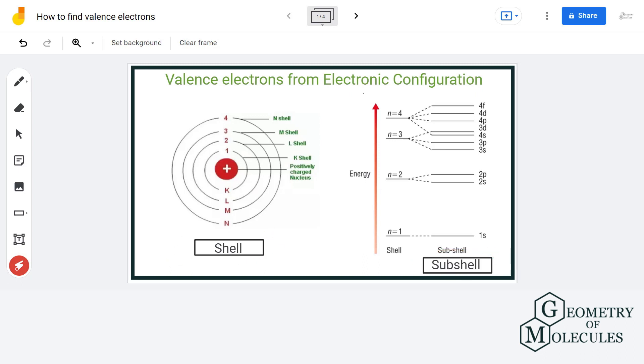If we try to understand it in simple terms, shell is a pathway followed by electrons around the nucleus as shown in this figure here. And subshell is a pathway in which electrons move within the shells.